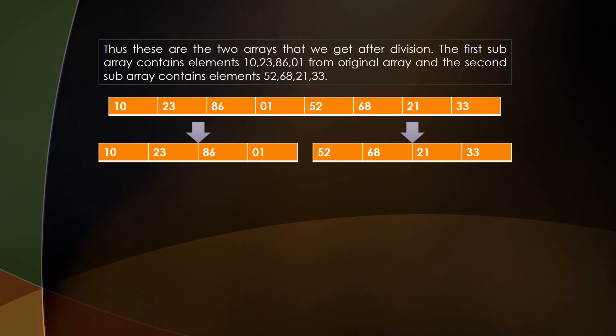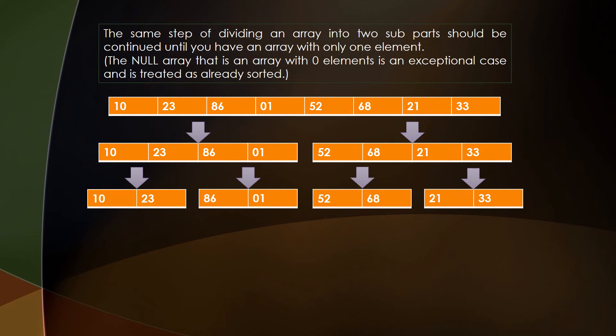Now this process should be continued until you get n sub-arrays each having only a single element. So again these two sub-arrays of four elements each will be divided into four sub-arrays having two elements each. So here it is, we have divided them and have gotten four arrays of two elements each.